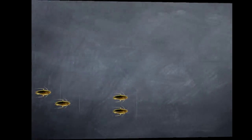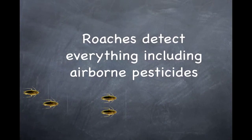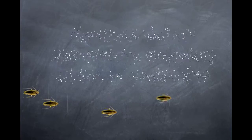German roaches can detect everything, including airborne pesticides and that's what a fogger is. They are very good at figuring out danger and we've tried everything over mankind's history, traps, baits, and sprays, but they still come back.